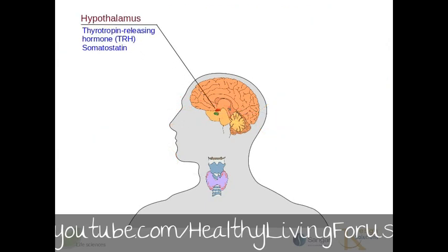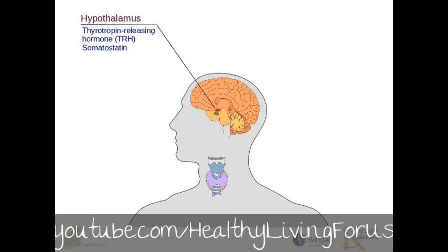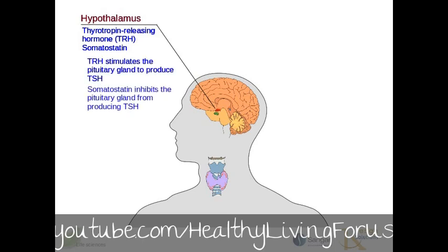Let's start with the hypothalamus. The hypothalamus detects low circulating levels of thyroid hormone, T3 and T4, and responds by releasing thyrotropin-releasing hormone, TRH. The TRH stimulates the pituitary gland to produce TSH, the thyroid-stimulating hormone. Somatostatin, on the other hand, inhibits the pituitary gland from producing TSH.